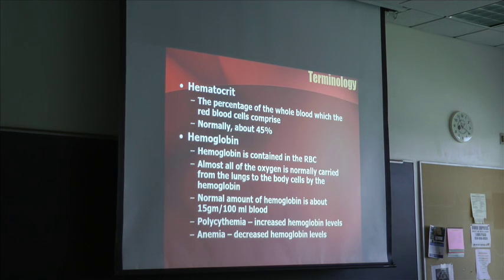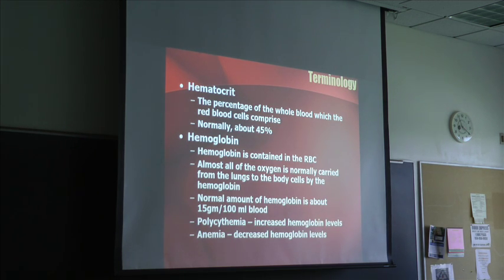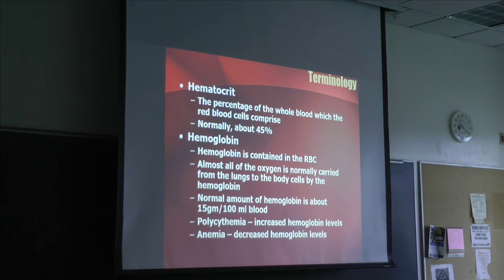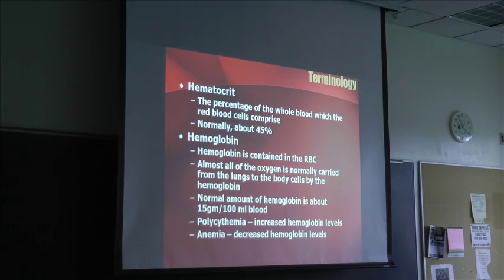The term polycythemia means a higher than normal hemoglobin level. Why would the body produce more than normal? If there's long-term hypoxia, that stimulates red blood cell production. So if you're living in the Andes Mountains, your hemoglobin level will be higher than somebody at sea level because the tissues always notice low oxygen levels up there, so the body produces more red blood cells to carry what little oxygen is in the atmosphere.